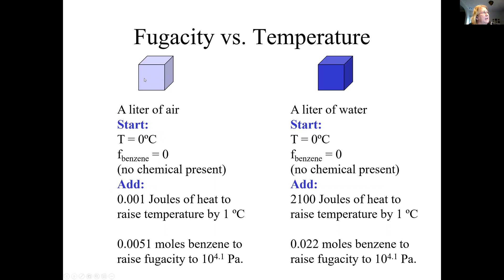That makes fugacity like temperature in the sense that at equilibrium, everything has the same temperature, even though they may contain different amounts of heat. So in the next example, we have a liter of air over here, and at the start it's at some constant temperature — let's say zero degrees Celsius — and there's zero benzene in it, so the fugacity of benzene, lowercase f, is zero.